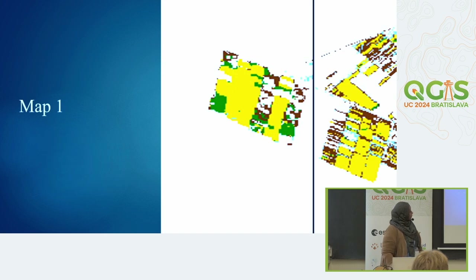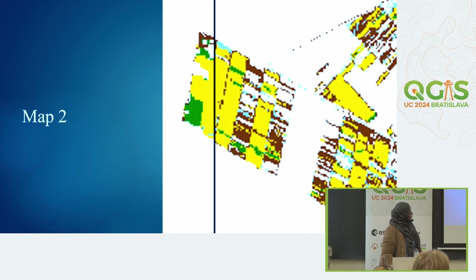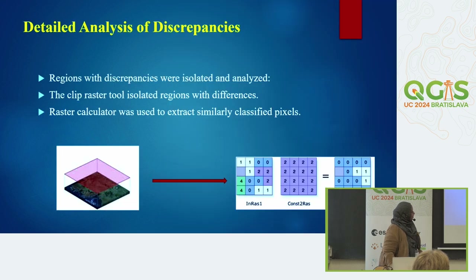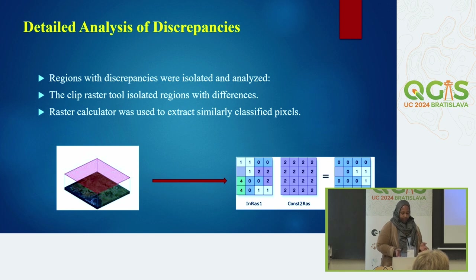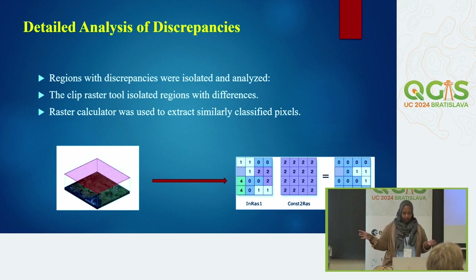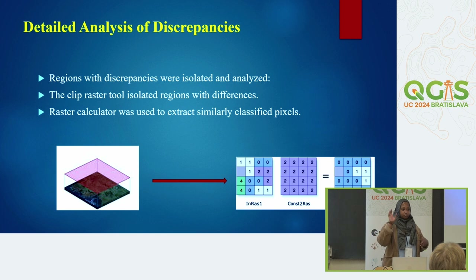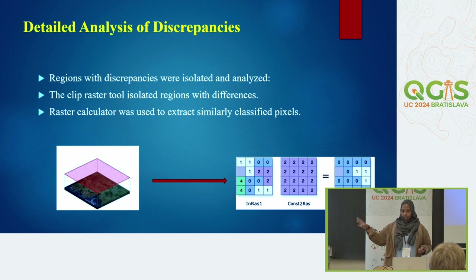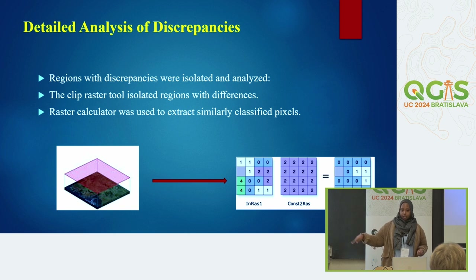Here is the first map and this is the second map — we can see more fallow land in one of them. For the detailed analysis of discrepancies, I first identified and isolated the regions with discrepancies, then used the raster calculator to isolate pixels that are similarly classified in both maps. I then used these isolated similarity pixels to create new self-training data and iterated the whole process again.